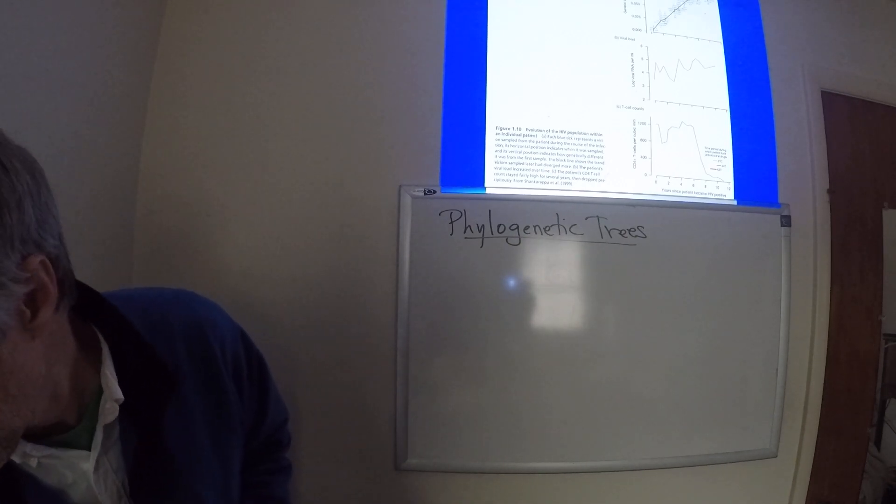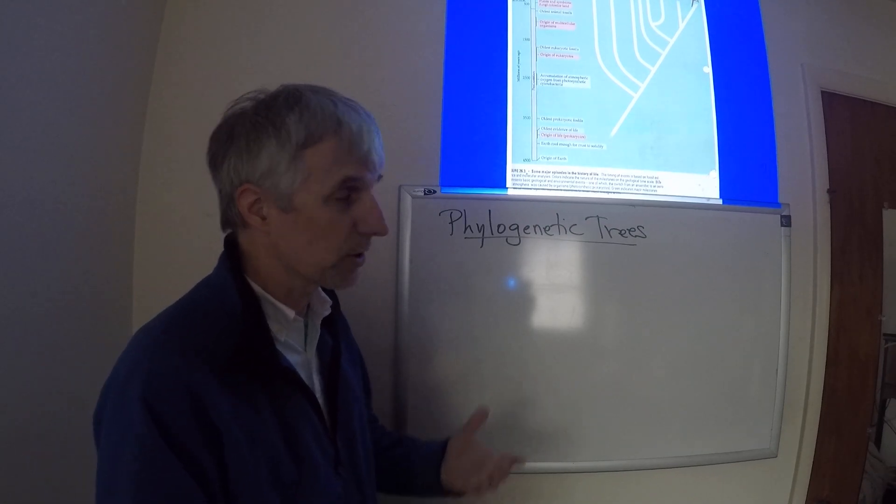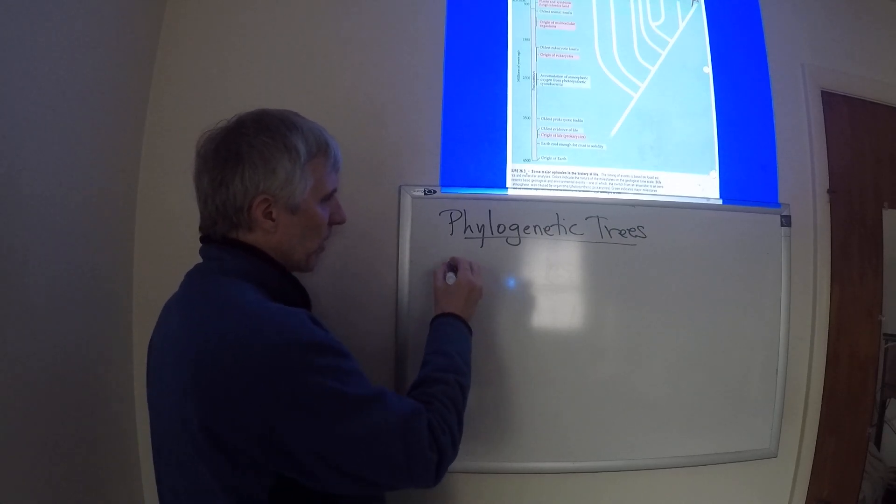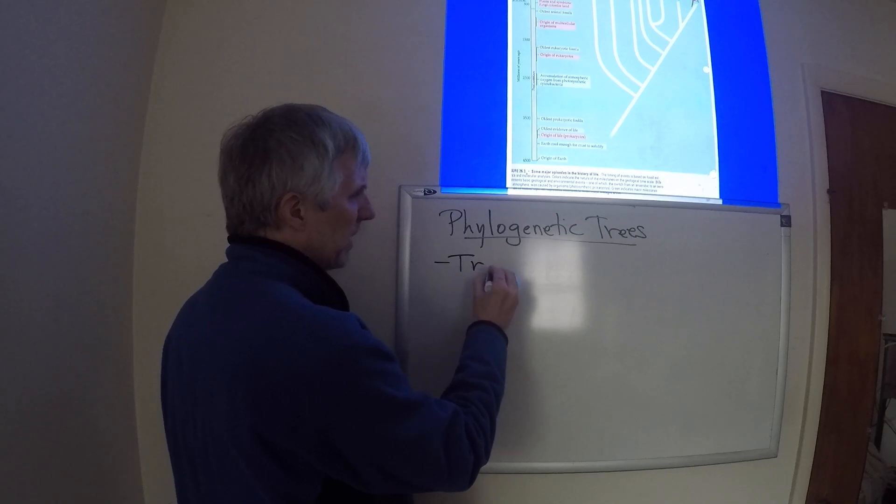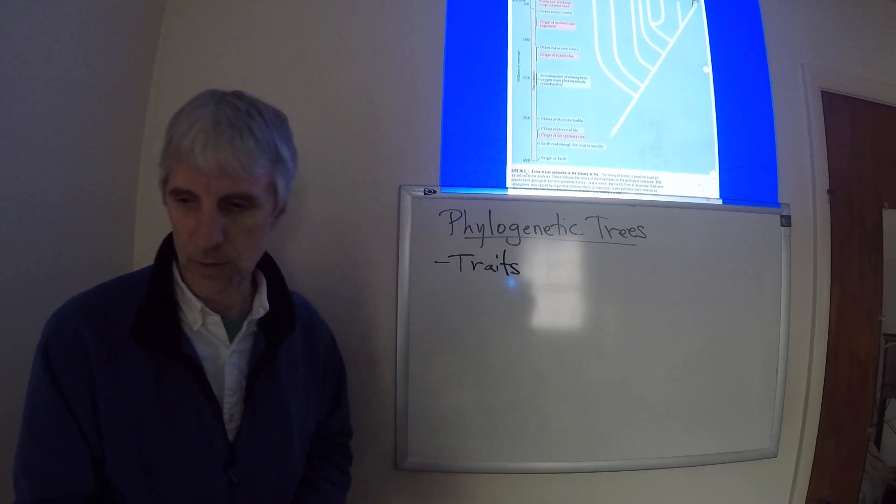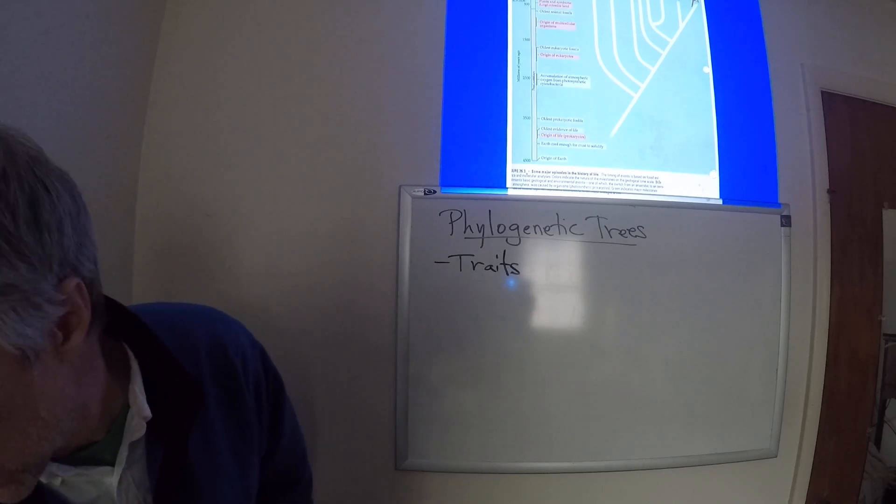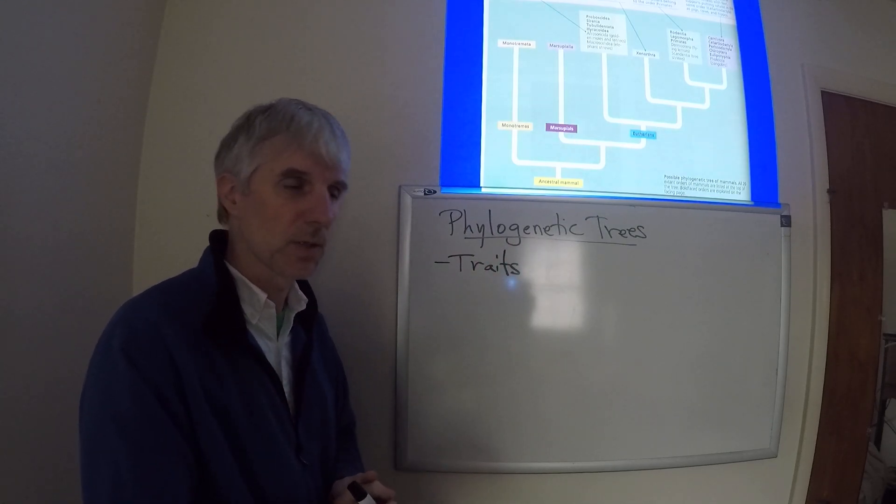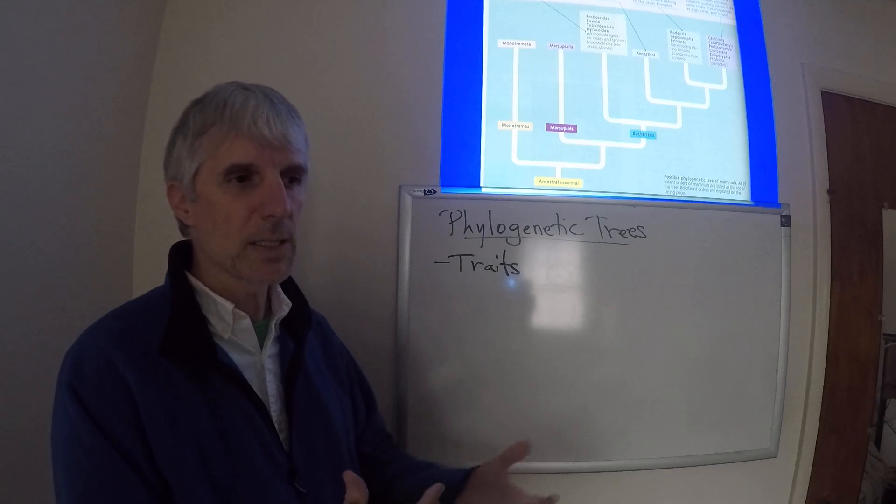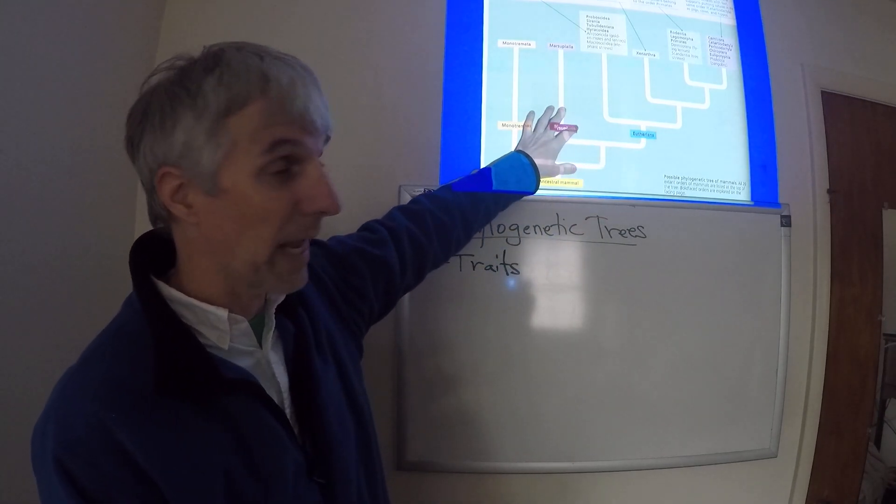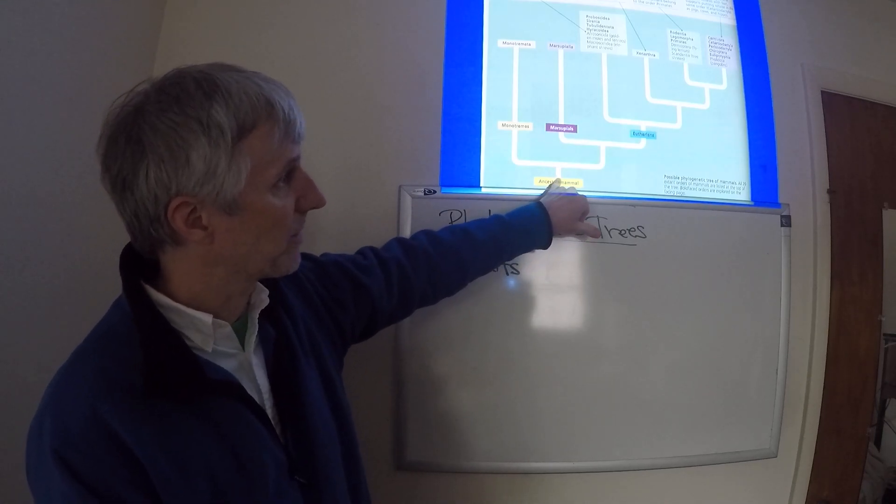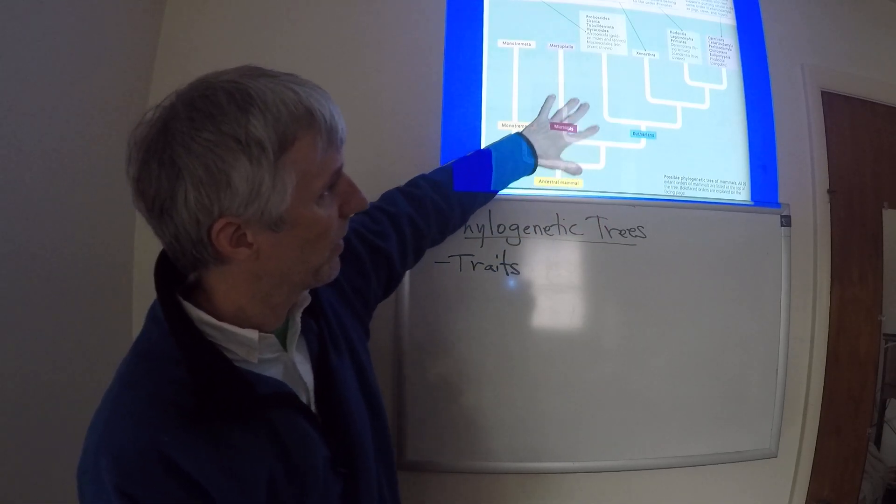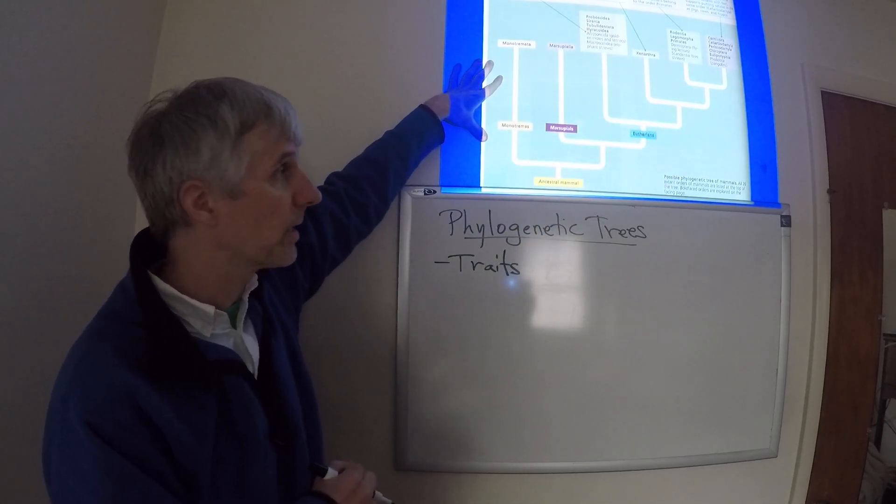So we can make phylogenetic trees using a variety of different approaches. The first approach might be to build the tree using specific traits that organisms have. So this would be a phylogenetic tree that's constructed in this way. We might take a bunch of traits that Linnaeus first described for mammals, for example, and use that to construct the phylogenetic tree here with the ancestral mammal here and the rest of the mammalian lineage listed here.